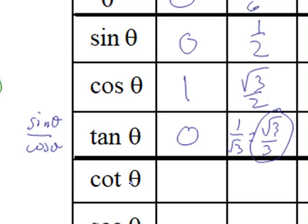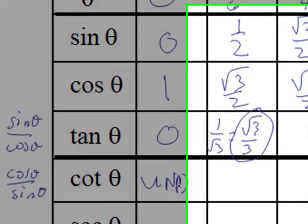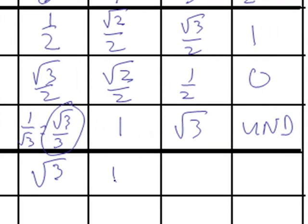Now the cotangent values, which are cosine theta over sine theta, are the same values as tangent, except that they are in reverse order. So cosine divided by sine, 1 divided by 0 is undefined. And then the square root of 3 and 1 and square root of 3 over 3 and eventually 0.